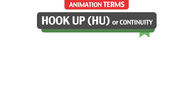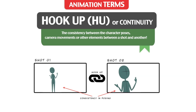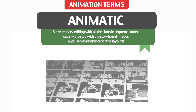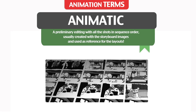Hook up or Continuity: the consistency between the character poses, camera movements, or other elements between one shot and another. Animatic: a preliminary editing with all the shots in sequence order, usually paired with the storyboard images and used as reference for the layouts.